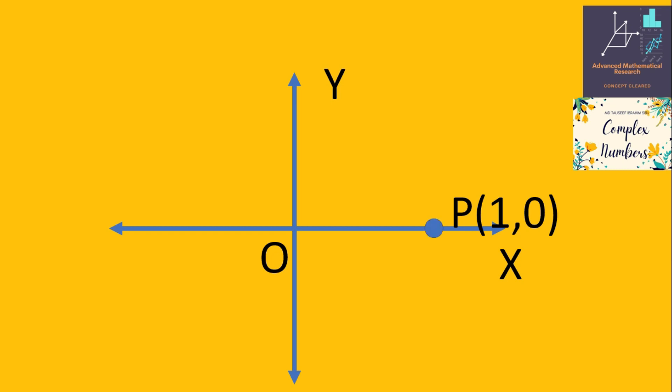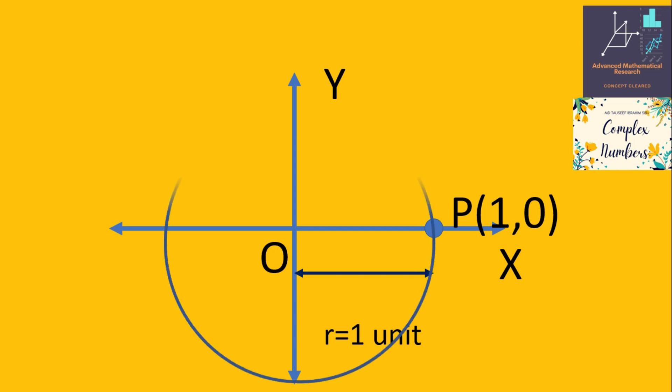This is our point P, at a distance of one unit from the origin. In the Cartesian coordinate system we can represent it as (1, 0). Its distance from the origin is 1, so we let r equal to 1.